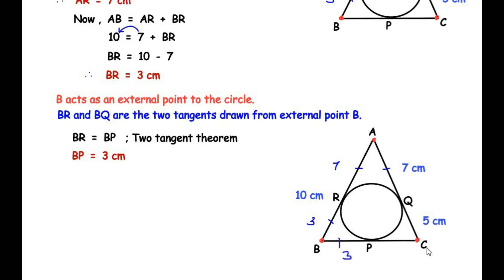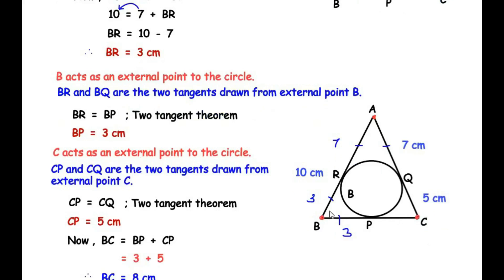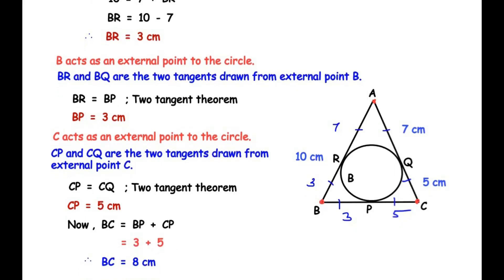Now for external point C: C acts as an external point to the circle, and the two tangents from C are CP and CQ. So the length of CP equals the length of CQ by the two tangent theorem. Since CQ was given as 5 cm, CP is also 5 cm. The total length of side BC is made up of BP plus CP, so BC equals 3 plus 5, giving a length of BC equal to 8 cm.